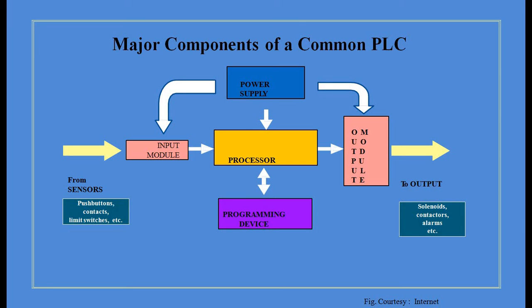We will go through the different components of a common PLC shown in a block diagram. Basically, a PLC has its central processing unit — we can call it a processor — which is connected to some input modules, some output modules, and very importantly, PLCs have their own power supplies. Power supply is given to the processor as well as input and output modules.